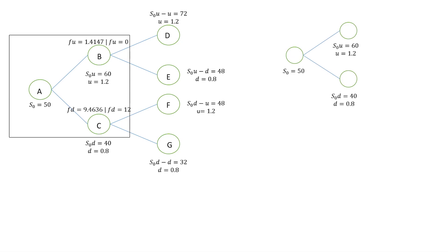For the American option, at each node we must compare the triangle solution value and the option payoff, and choose the larger one. For node B: triangle gave 1.4147 and option payoff gave 0 — we choose FU = 1.4147. For node C: triangle gave 9.4636 and option payoff gave 12 — we choose FD = 12. This rule of choosing the maximum applies to both call and put American options.